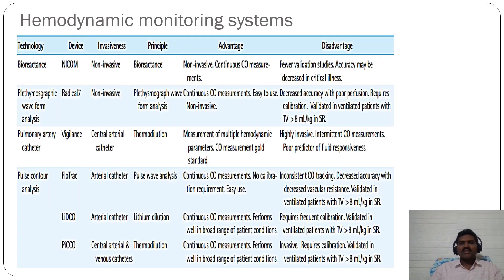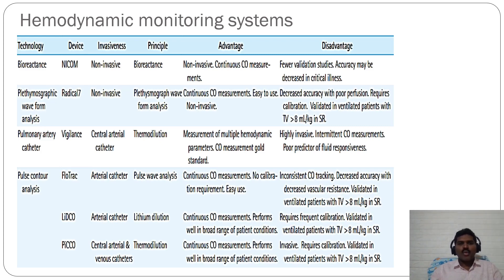Several commercially available hemodynamic monitoring systems assess volume status and fluid responsiveness. Bioreactance technology: the NICOM device provides non-invasive continuous cardiac output measurements, though fewer validation studies are available and accuracy may be decreased in critical illness. Plethysmographic waveform analysis: the Radical-7 device provides non-invasive continuous cardiac output measurements; it is easy to use but has decreased accuracy with poor perfusion, requires frequent calibration, and is validated in ventilated patients with tidal volumes greater than 8 mL/kg.